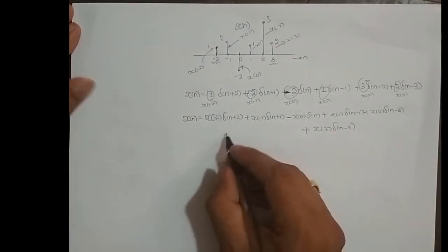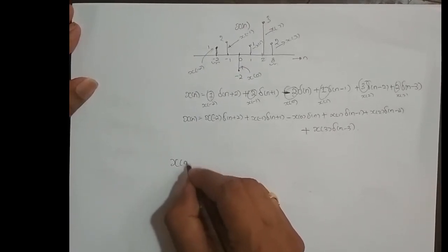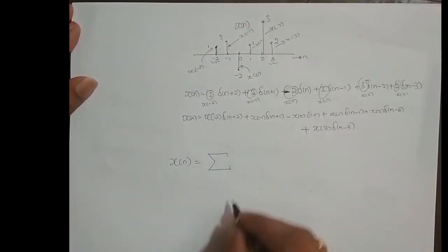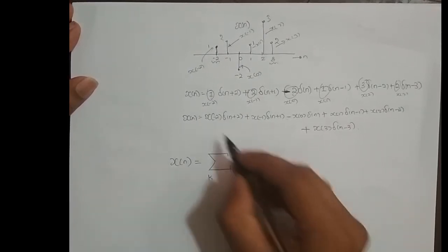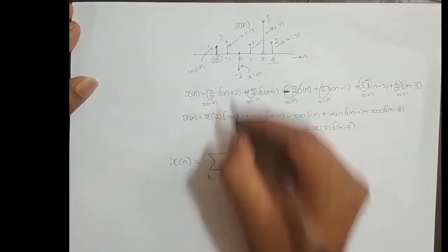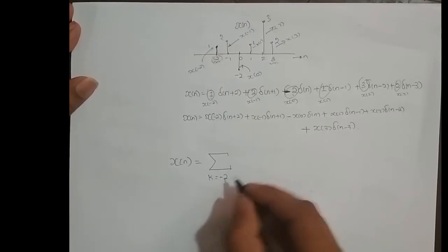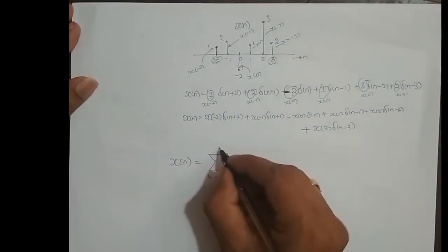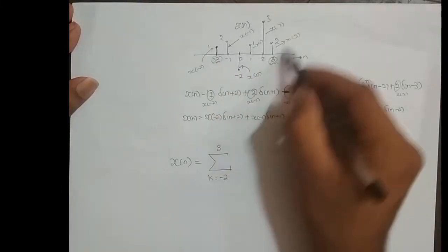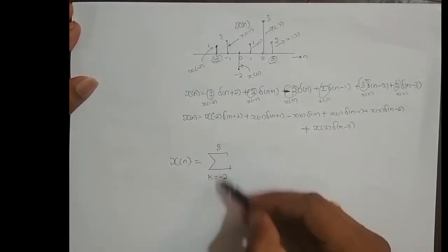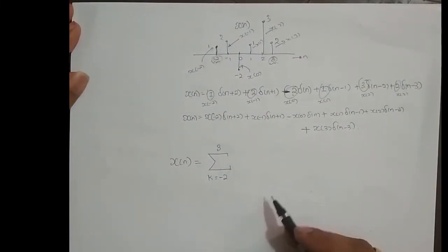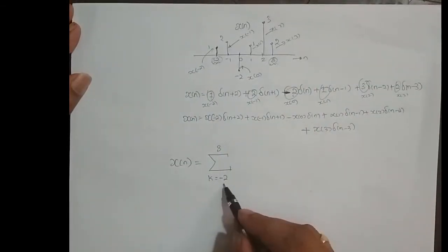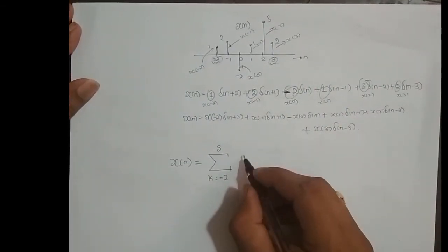We can actually represent this in a compact form. We write x of n equal to summation over k, where k varies from minus 2 to 3 — depending on the range of the signal you have to set the summation limits. If x of n varies from minus infinity to infinity, then k varies from minus infinity to infinity.